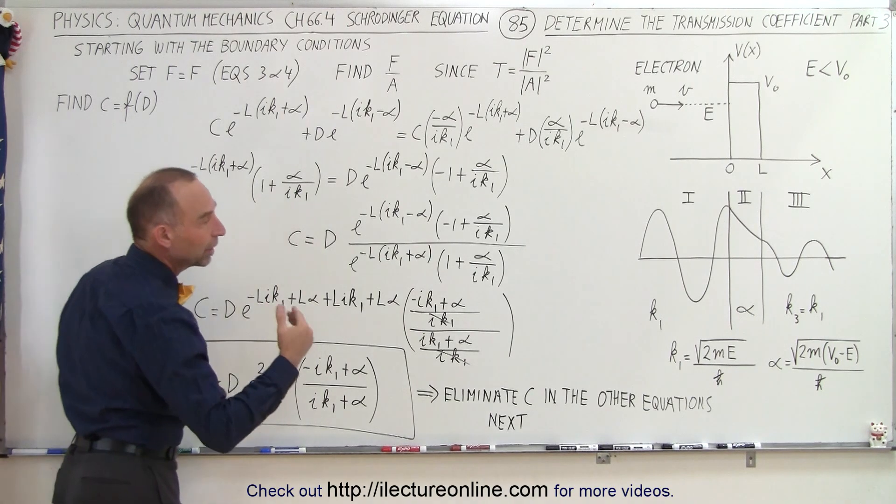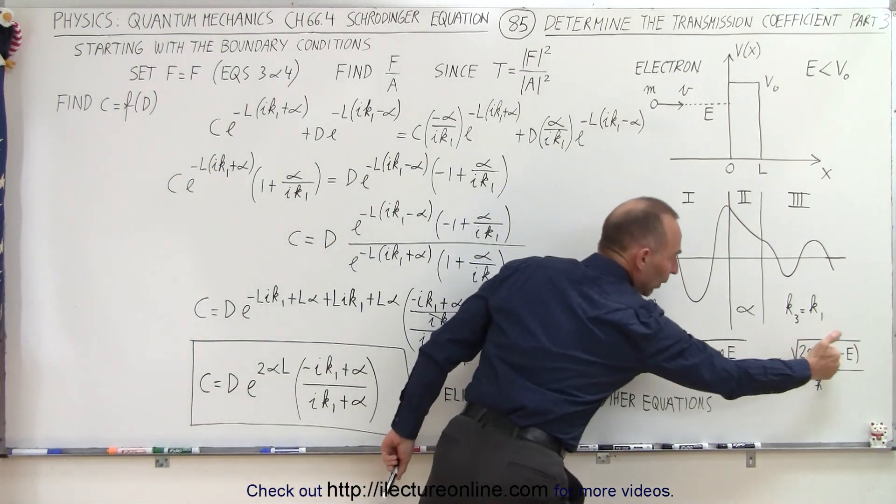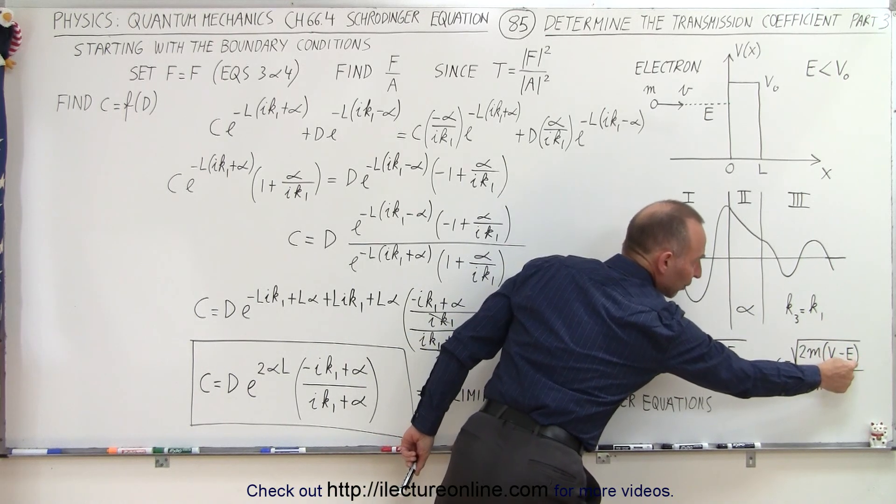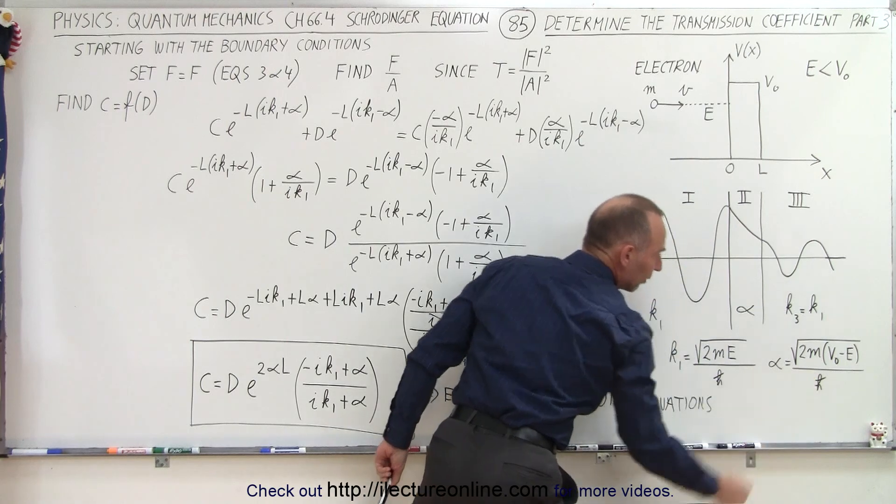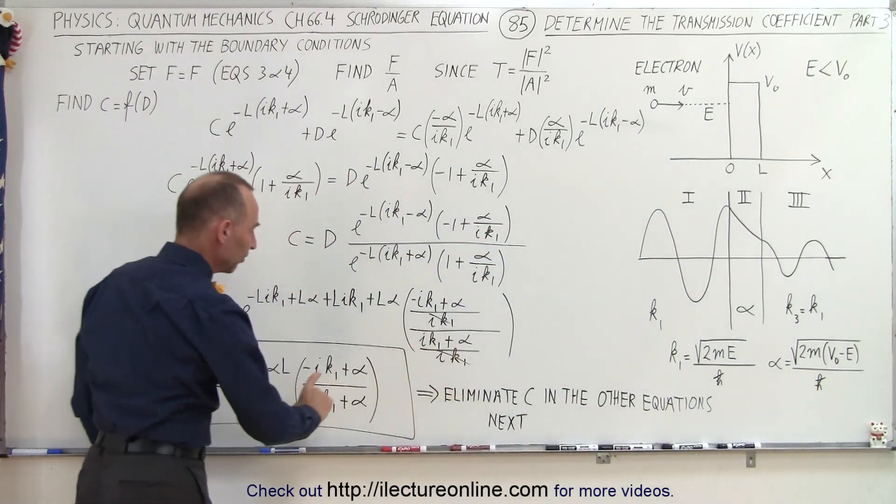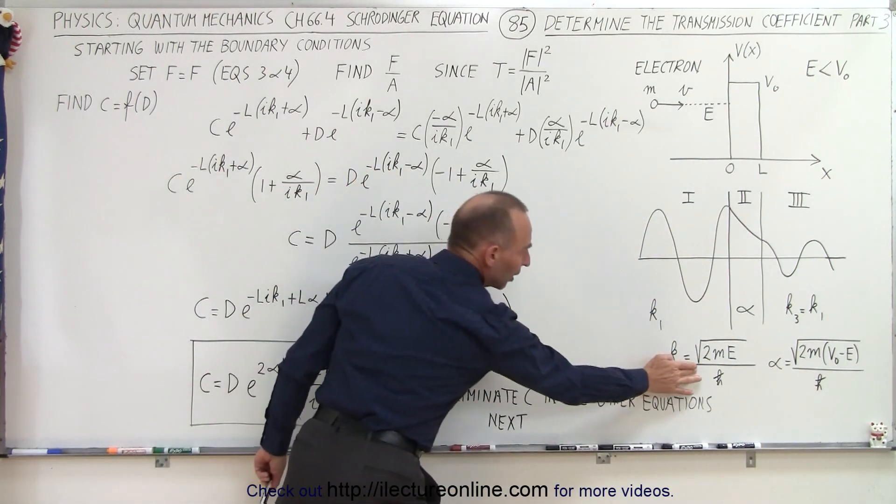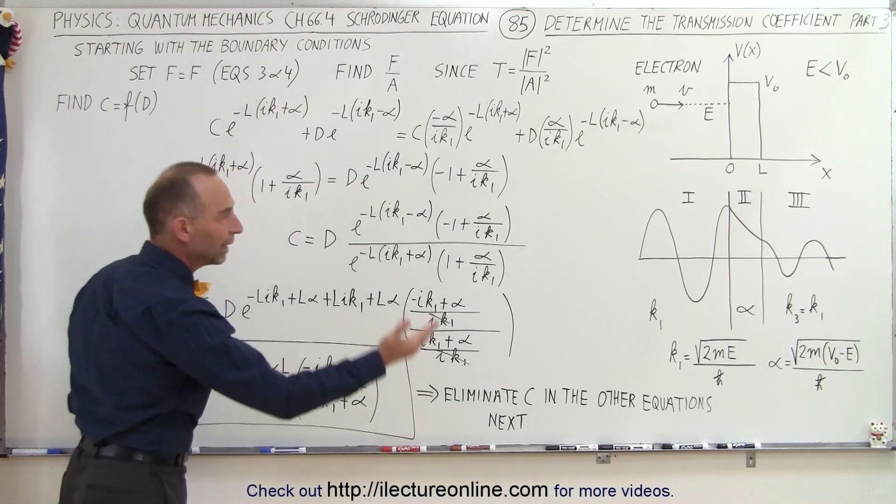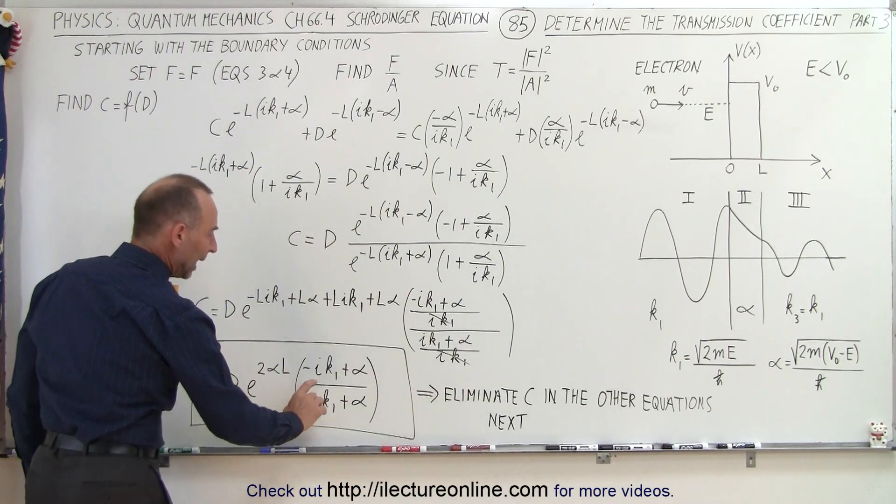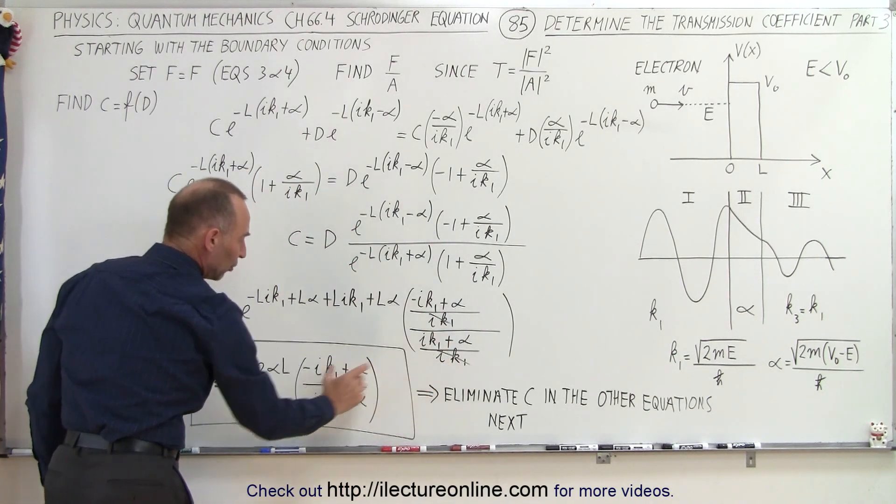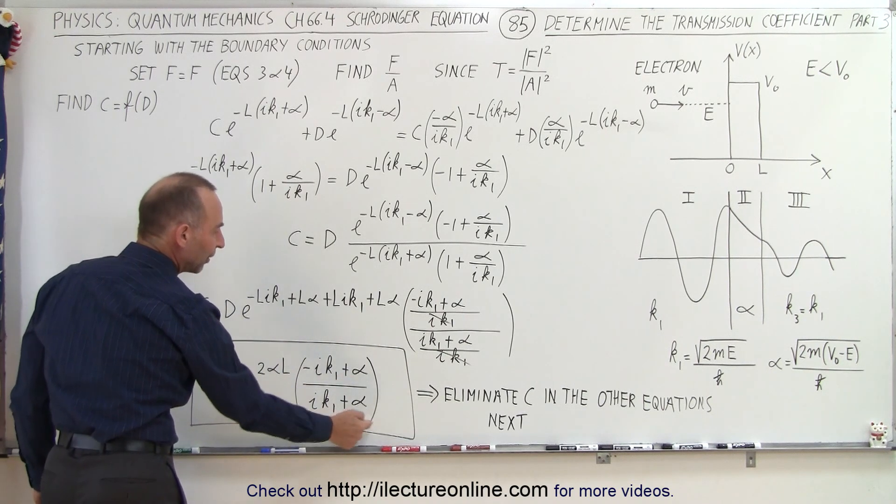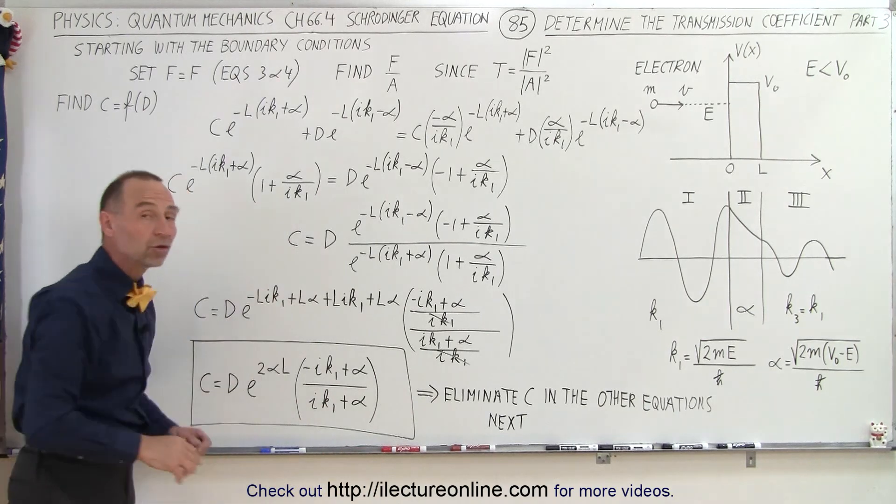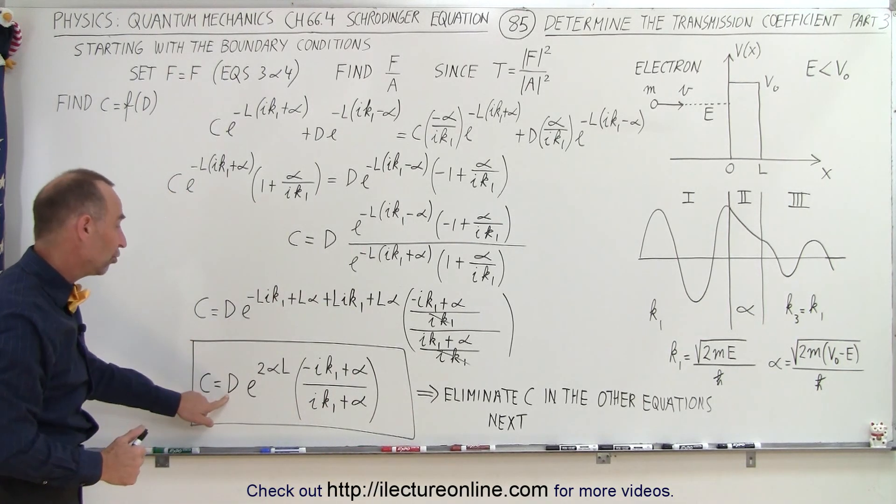Alpha is something that's determined by the relative energy of the particle versus the energy of the barrier, the mass of the particle, and H-bar. That will give us the alpha term. K1 is what we call the wave number in region 1. If we eliminate the denominators, we end up with minus IK1 plus alpha over IK1 plus alpha. So now we have a nice equation that has C expressed in terms of D.